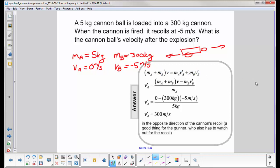We want to solve for the final velocity of the cannonball, which is V prime A. So we rearrange the equation to isolate V prime A, and hopefully you can do that in your head and just write it down. It's this side minus MB VB prime, and then you divide everything by MA.